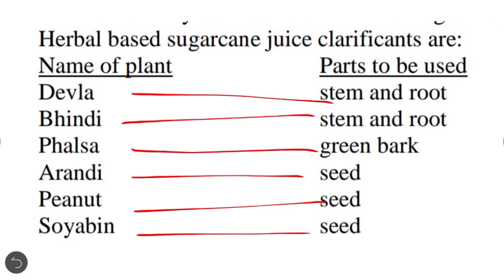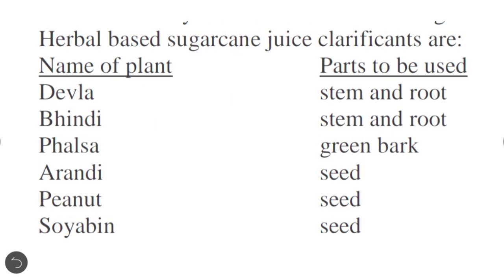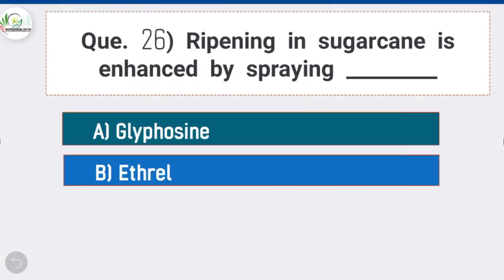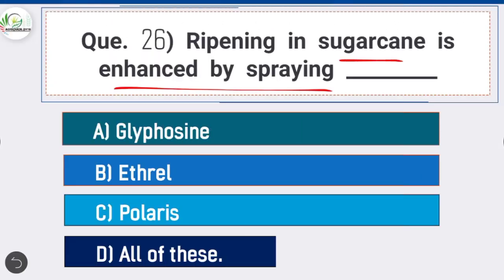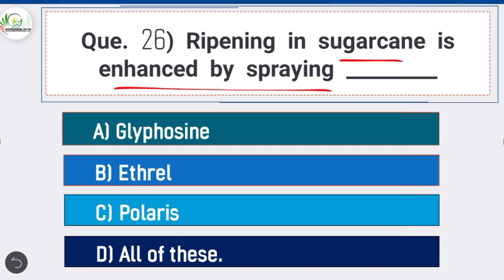Question 26: Ripening in sugarcane is enhanced by spraying of — option D is correct: all of these — glyphosine, ethrel, and polaris.